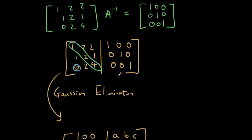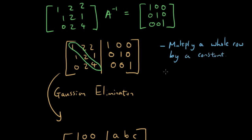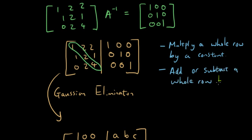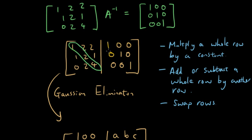Now, what are the three things we are allowed to do with Gaussian Elimination? First, we can multiply a whole row by a constant. Second, we can add or subtract a whole row by another row. Third, we can swap positions between rows — so we can put row one in row two and row two in row one, and so on. These are the three allowed operations in order to get the left-hand side down to an identity matrix.